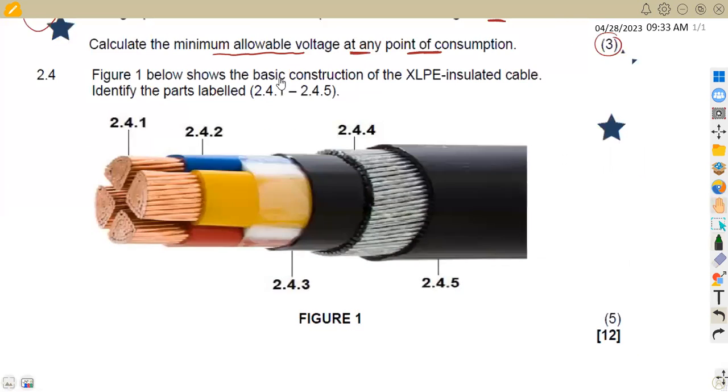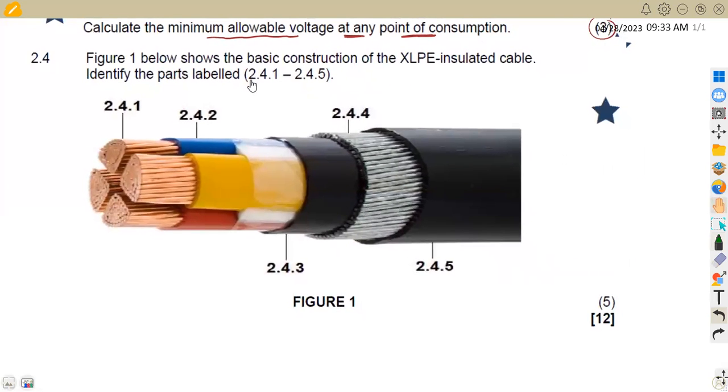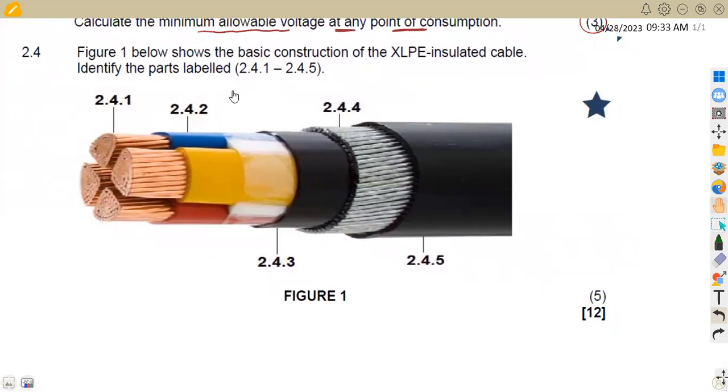On 2.4, we are now given to consider figure 1 below. It shows a basic construction of the XLPE insulated cable. Identify the parts labeled. So this one is just an issue of identifying these parts. So the 2.4.1, these are the conductors. So this one, that's a conductor.